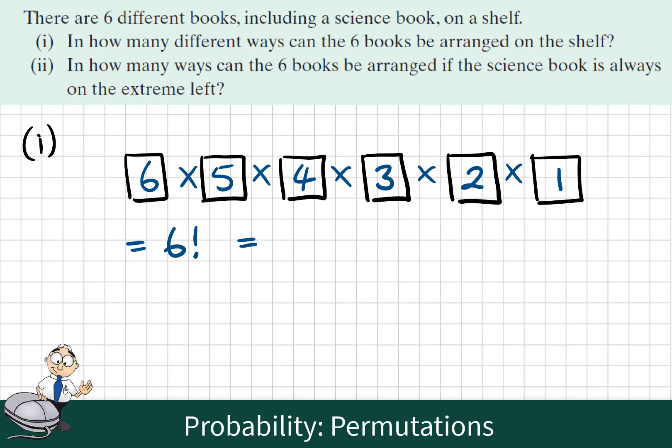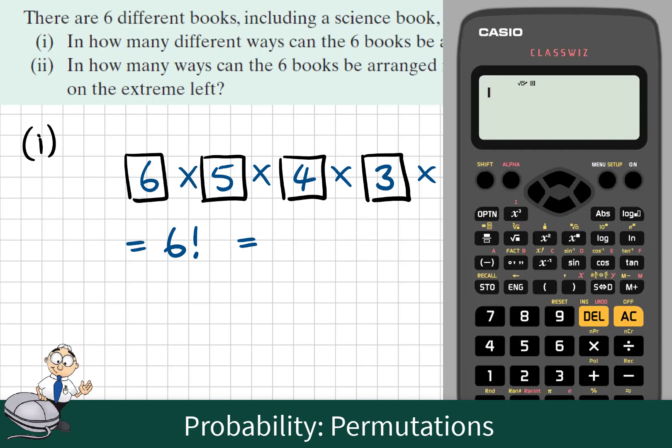We can use the calculator to find this quickly. So there is a button with an exclamation mark here on the calculator, the factorial button. So six, shift and the factorial button will give us the answer 720.